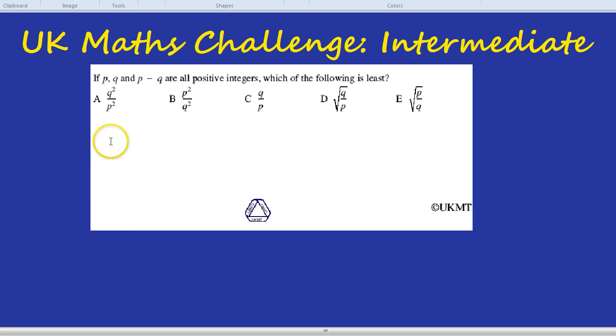Here's the question. If P, Q, and P minus Q are all positive integers, which of the following is least?